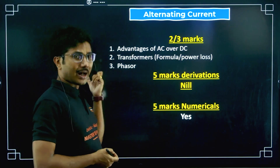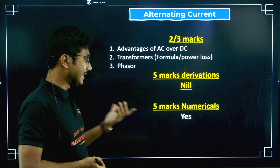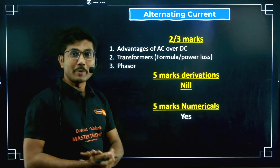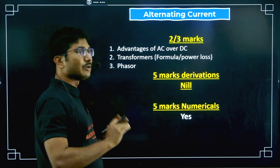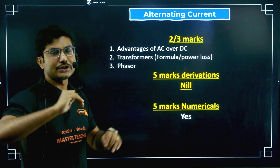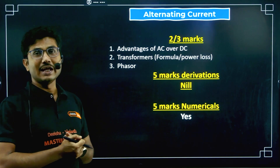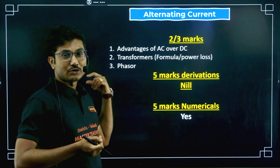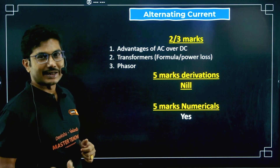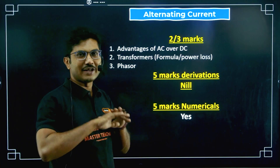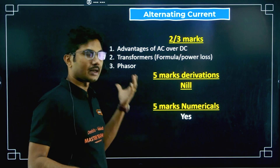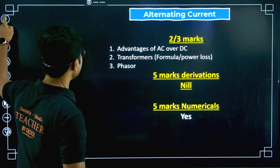Phasors came up once in past few years but generally do not come. Five-mark derivations will not come from this chapter, but five-mark numericals will. The numericals can be tricky, but if you remember a few formulas — Z, XL, XC, how to calculate Z, how to calculate phase difference — then the questions follow a generally very common track. If you practice numericals from this chapter you can definitely solve them, though you will need a calculator.